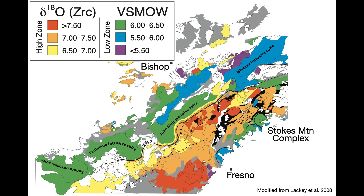Here are some of the results of a wonderful study of oxygen isotopes in Sierra Nevada plutons by Jade Star Lackey. North is to the left. Note that the arc rocks of the Stokes Mountain complex have mantle-like δ18O in zircon values, as expected. What is probably not expected is that the post-100 million-year plutons such as the Sonora, Tuolumne, and so forth, shown in blues and green, also have mantle-like δ18O zircon values, showing the lack of crustal input.